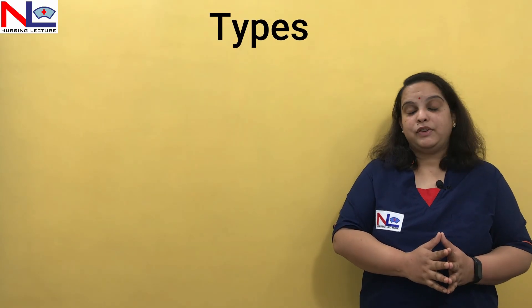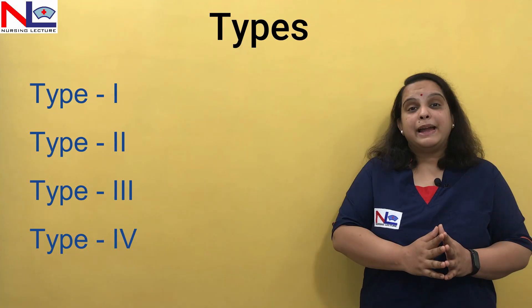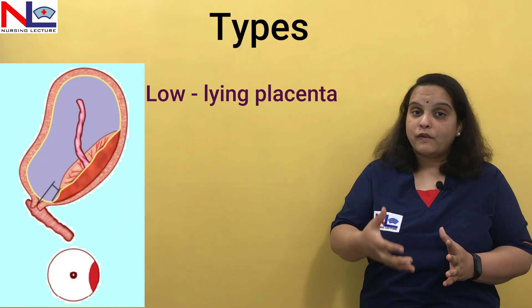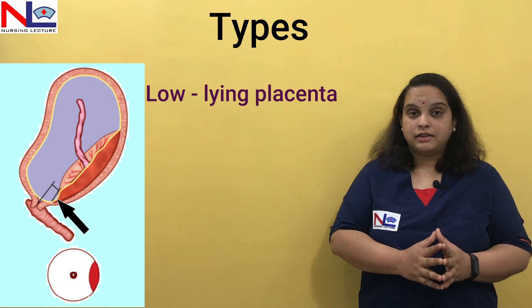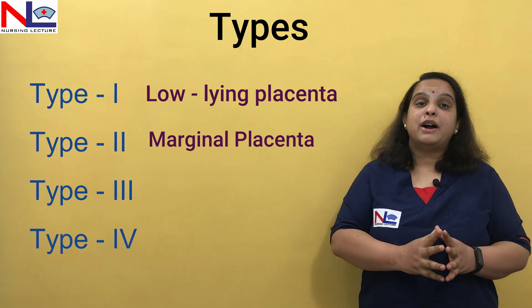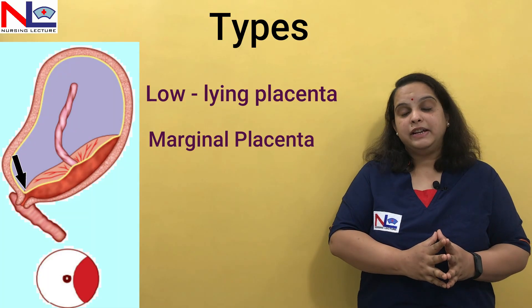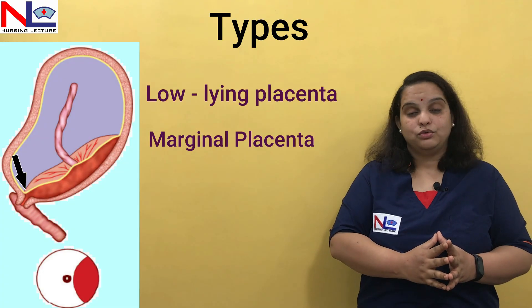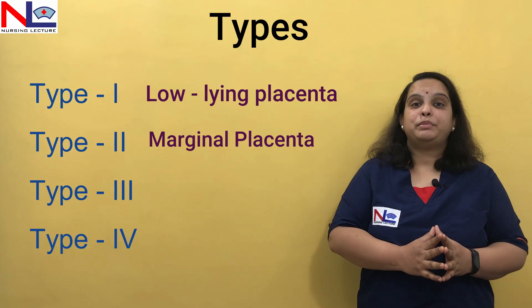Now let's talk about the types of placenta previa. There are classically four types. Type one is low-lying placenta, where the placenta is in the lower segment but does not reach the internal os of the cervix. Type two is marginal, where the edge of the placenta touches the rim of the internal os — the placental tissue just margins the internal os.